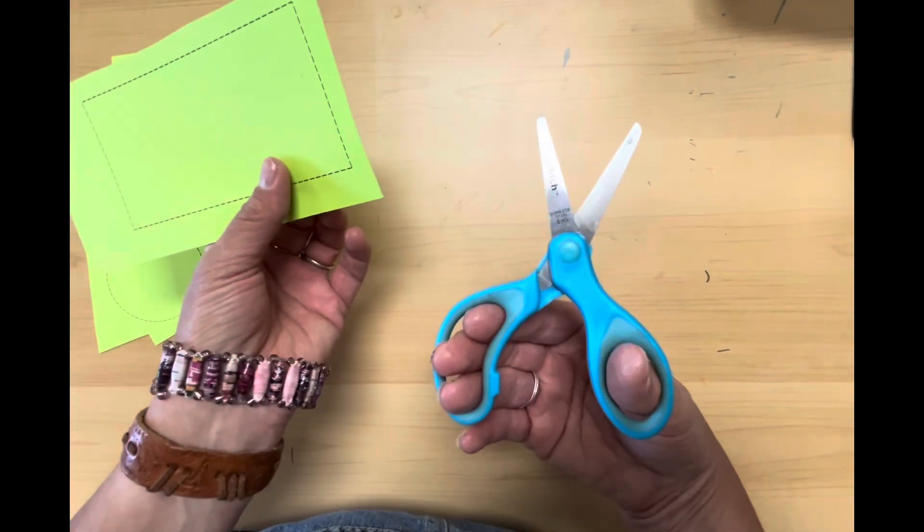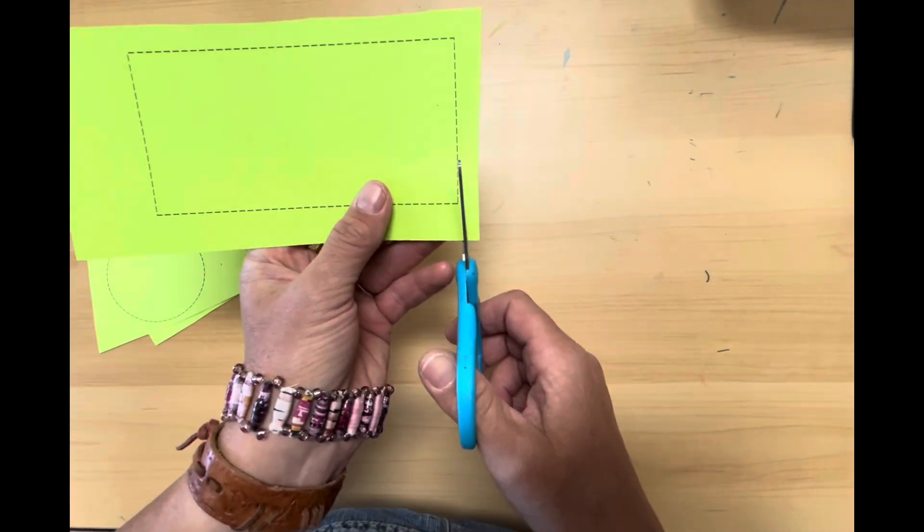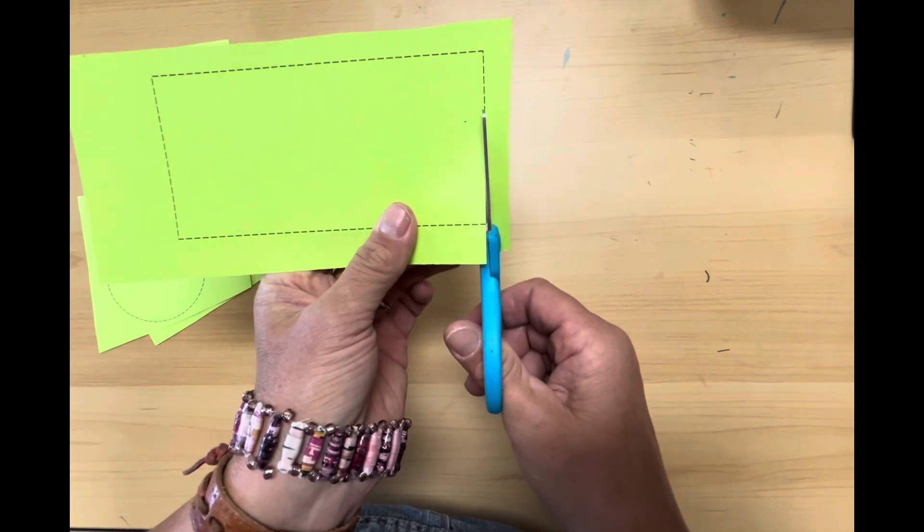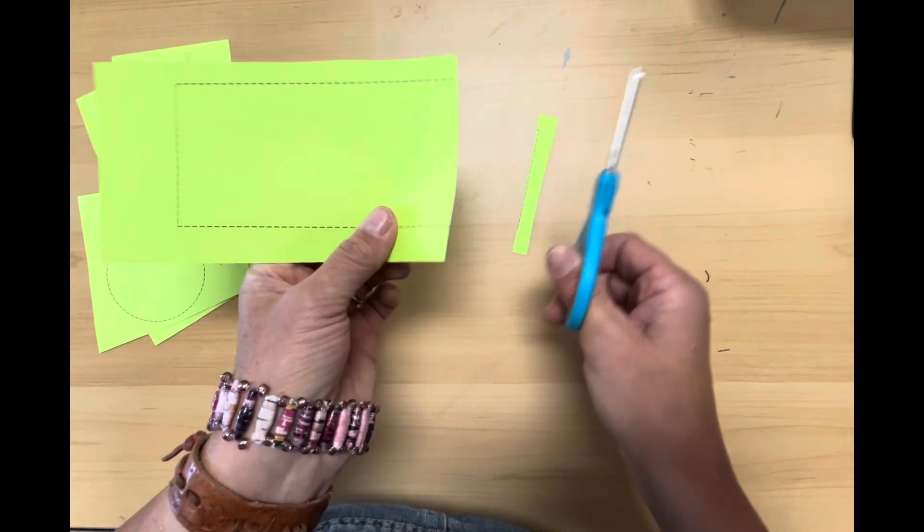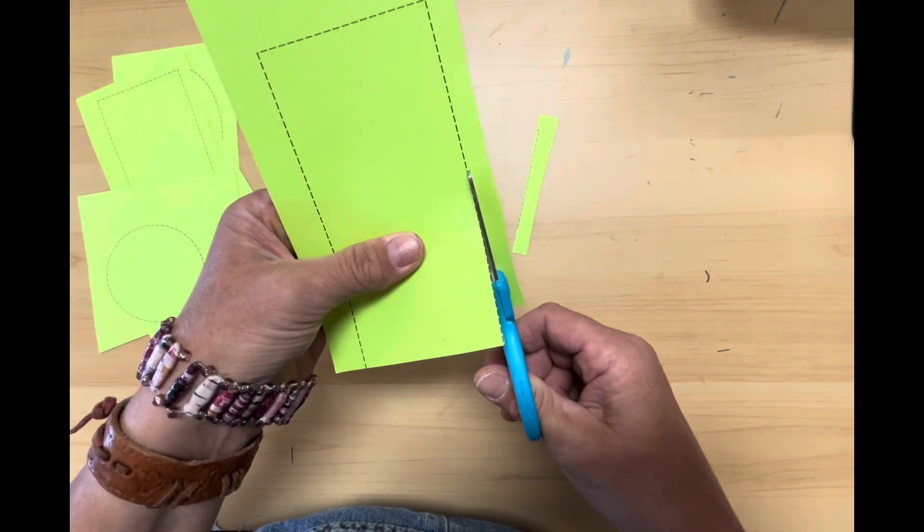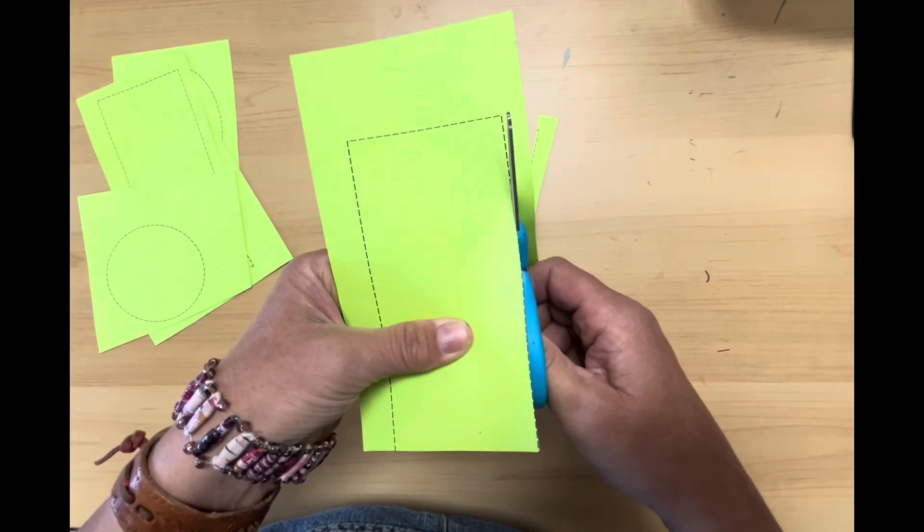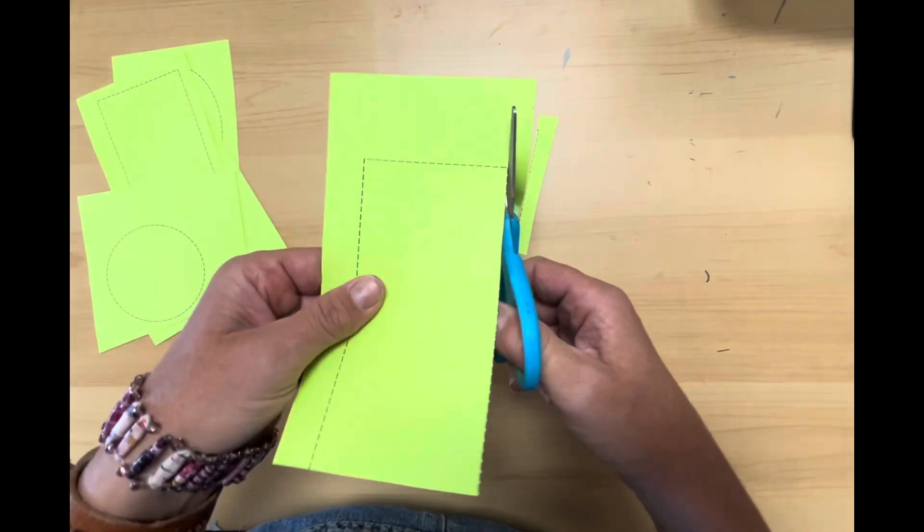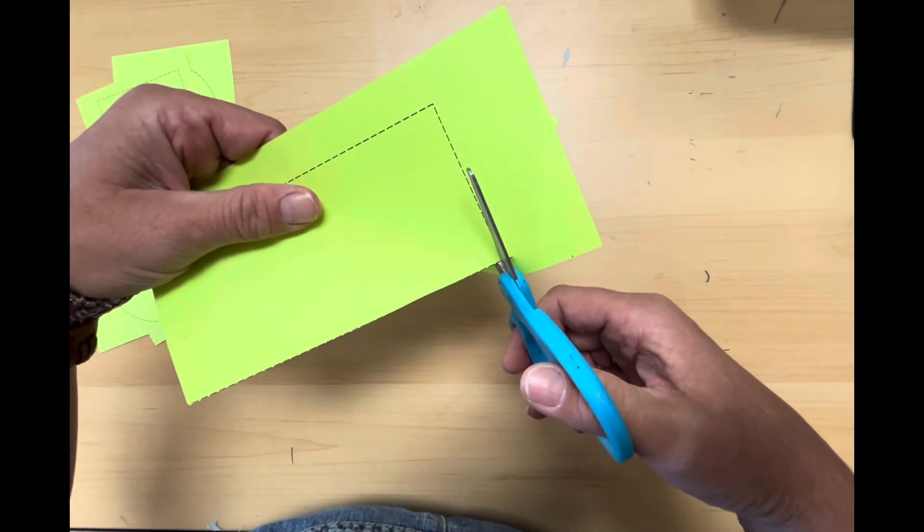I'm going to start with my straight line shapes like my rectangle, square, and triangle. I'm going to cut slowly on the dashed line. I can either cut straight off the edge or I can turn my paper. See how I turn my paper?